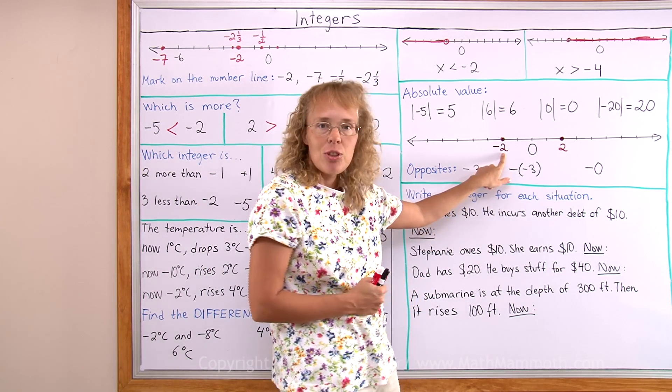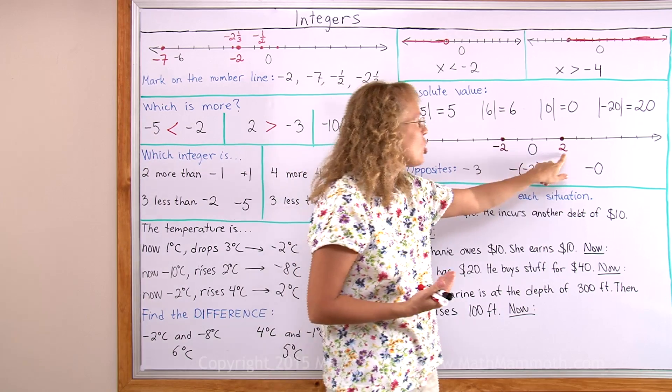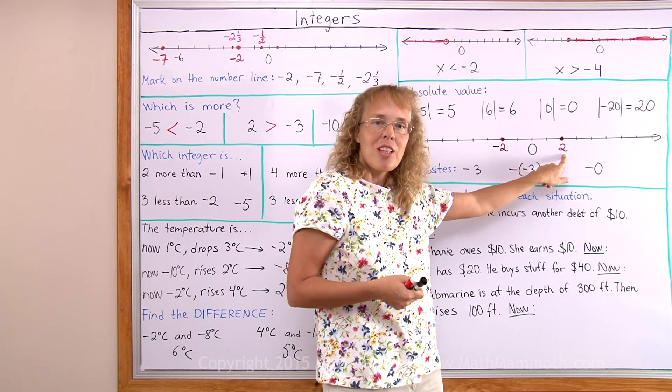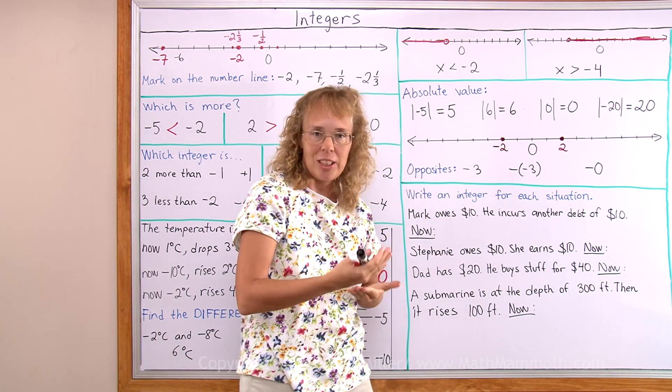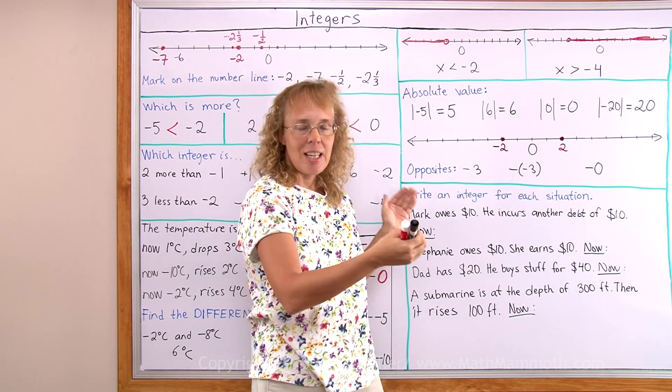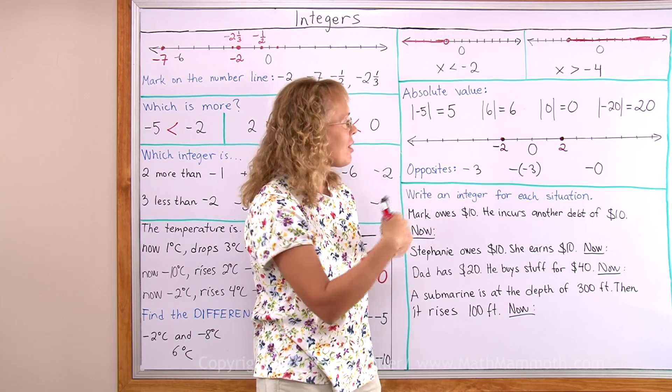You see, for negative 2 its opposite number is 2. And for 2 the opposite of 2 is negative 2. These two numbers are each other's opposite numbers. Because they are at the same distance from 0 but just on the other side.